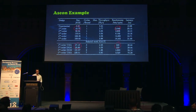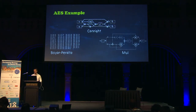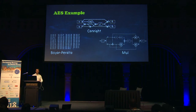In terms of actual latency in nanoseconds we also achieved a reduction. However, when we look at the first-order numbers, we needed to invest more than 10 kilogates to achieve this, and we use more than six times the randomness. So it costs something, but it works. The Ascon S-box was actually designed to be easy to protect against side-channel analysis, so we also picked a much more difficult example: the AES S-box.